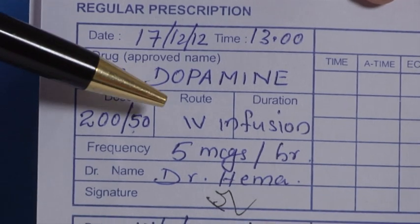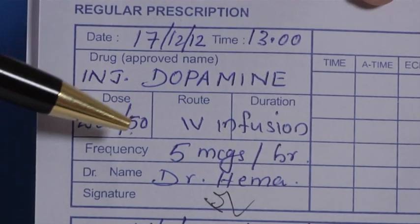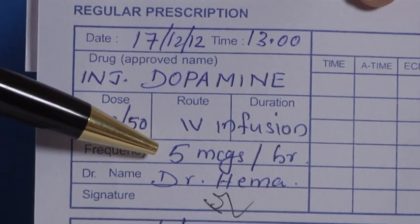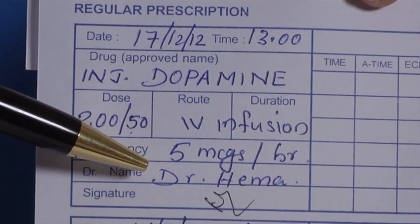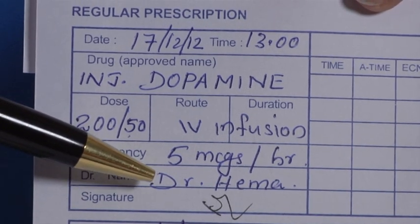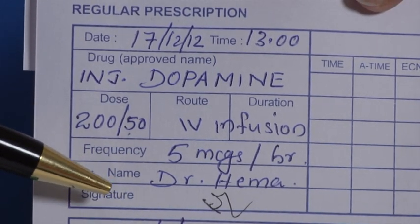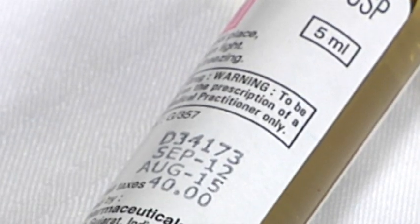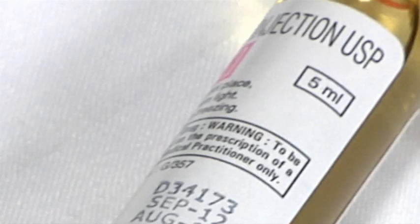Then we have our route, which is IV infusion. The frequency is 5 micrograms per hour. And at the last, we have the doctor's name, Dr. Hema, which is followed by the signature. These 5 ml ampoules of the drug contain 200 mg of dopamine and we will use them to create the solution.